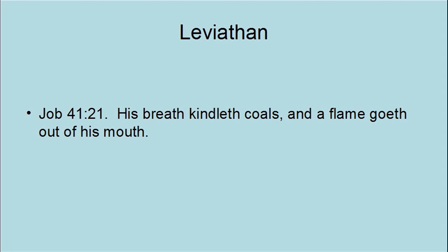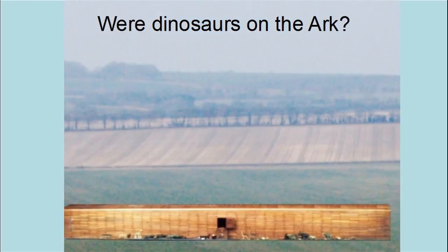The next natural question is: if dinosaurs have always lived with man, were they on the ark? According to Genesis 6:19–20, Noah is told to take two of every kind of land animal on the ark. Dinosaurs were land animals, and so dinosaurs were on the ark.